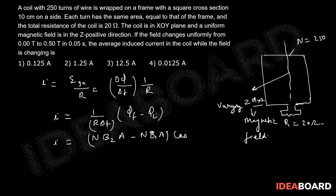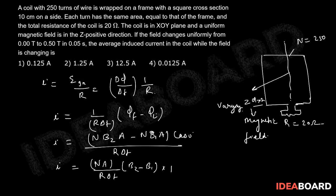Right, and obviously cos 0 was there divided by R into delta T. Now let's take this common so N into A will be common: N into A divided by R delta T into B2 minus B1 into 1.